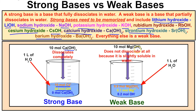Everything else is a weak base. For example, magnesium hydroxide is slightly soluble in water — not all of it will even dissolve — so you won't have very many OH⁻ ions floating around in solution, making it a weak base. Strong bases completely dissociate in water, while weak bases do not fully dissociate, resulting in a relatively low amount of OH⁻ ions in solution.